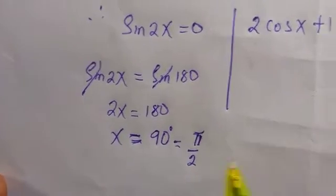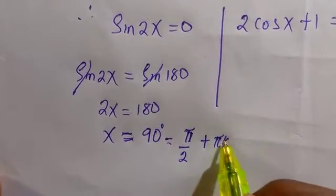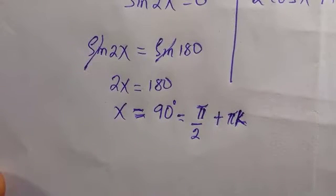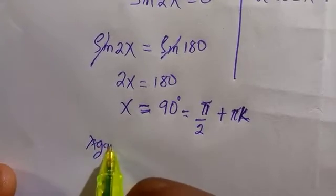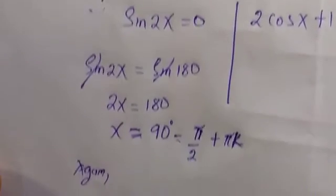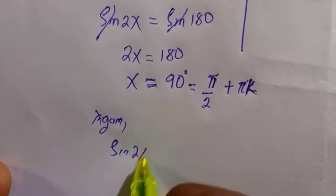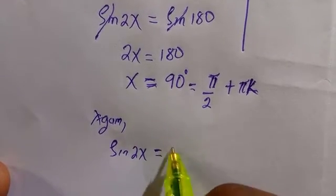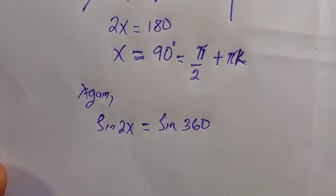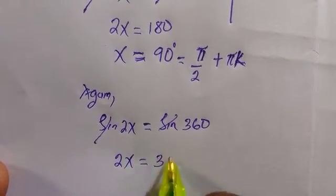So if this is the value of x when we consider 180°, it doesn't end yet. The next thing we test for is: suppose you have sin(360°), that is still going to be 0. Therefore, we have sin(2x) = sin(360°). When we cancel these, we get 2x = 360°, and dividing by 2, x = 180° which is also the same as π.